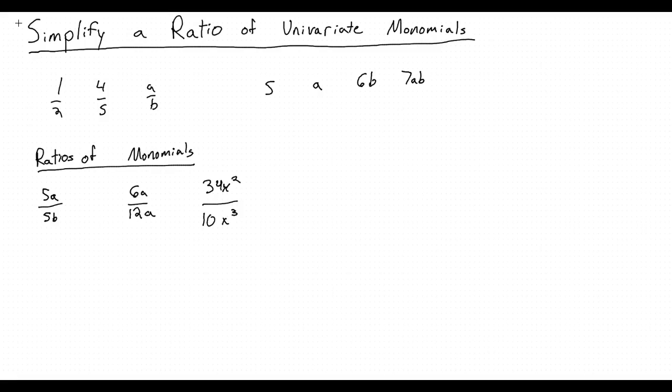What about univariate? What does that mean? That means in the ratio there is only one variable. So in the examples of ratios of monomials above, 5a and 5b would not be univariate because it has an a and a b. 6a and 12a would be because it has only a, as would 34x squared over 10x to the third. That only has x in it.